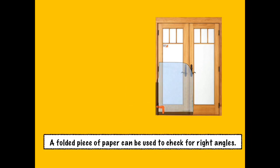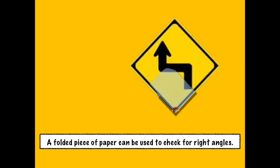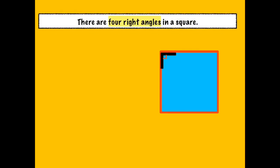This shows that the door has some right angles in it. How many right angles do you think are there in that given door? Let's try to put the folded paper at the corner of the given illustration to check if there is a right angle. This shows that the given road sign has some right angles in it. How many right angles do you think are there? We may also use the folded piece of paper to check and analyze the angles in the square. There are four right angles in the square. We say that the right angle is the most important angle as it can be used to compare with the other kinds of angles.